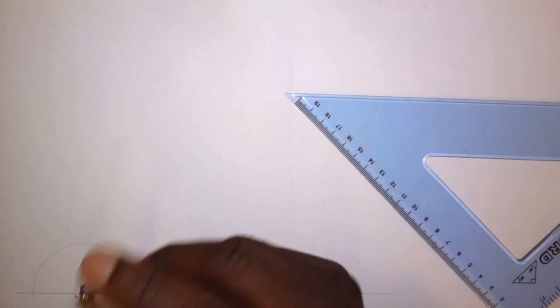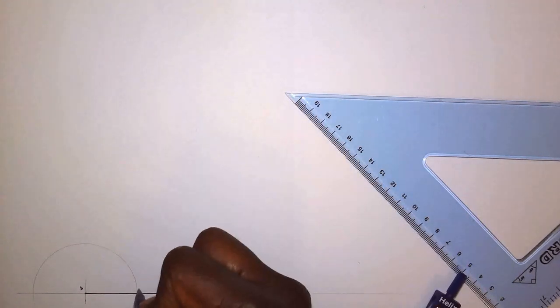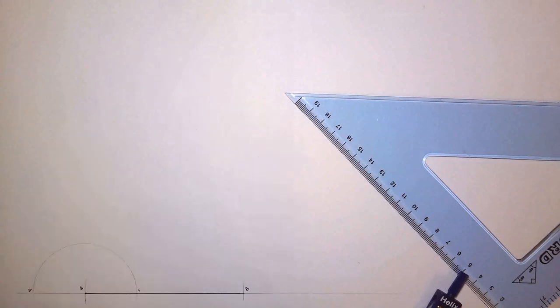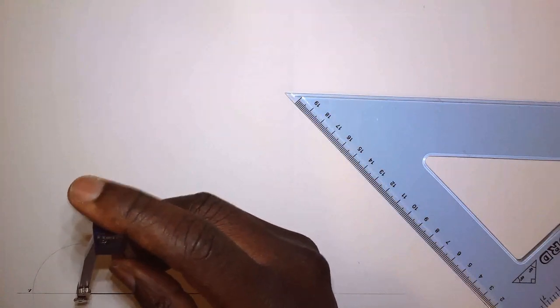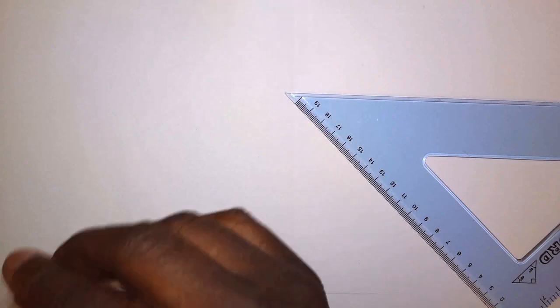And what I'm going to do is I'm going to stand at one end. So let's call that end, I don't know. Let's call it one. And the other end of the semicircle. Let's call that two. So what I'm going to do is I'm going to stand at one. Open to a distance greater than A but not exceeding two. Then I'm going to scribe an arc like so.